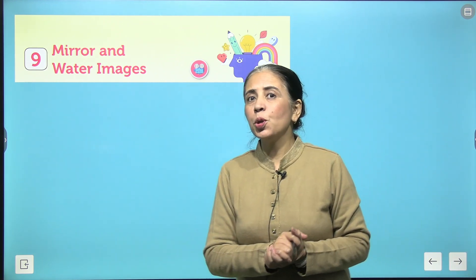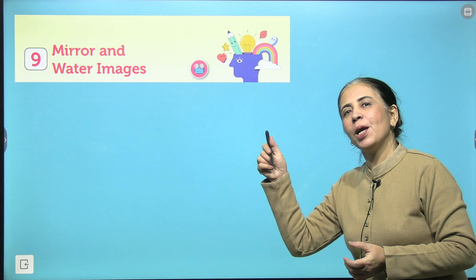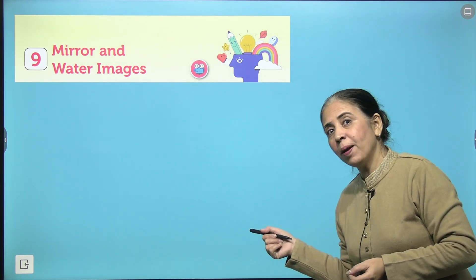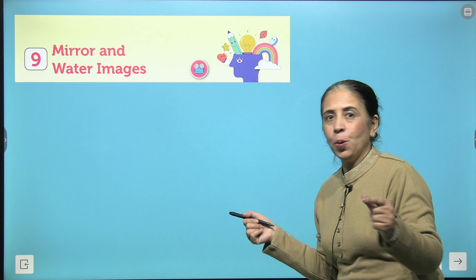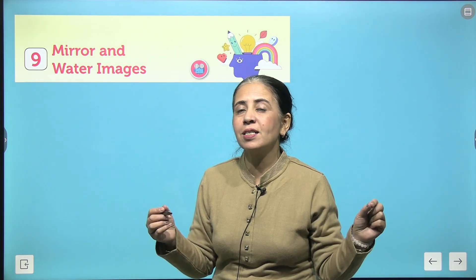Hello my shining stars, welcome to your Aptitude and Reasoning book of grade 7. Today we are going to study chapter number 9, that is Mirror and Water Image. You already know that once you start working on understanding the concept of water and mirror image, that makes a good coordination between your eyes and brain.